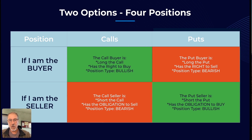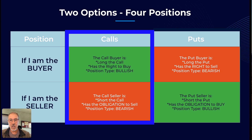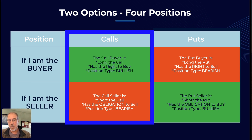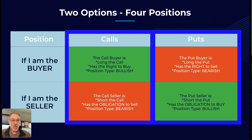There are really only two options: puts and calls. But these two options can create four different positions depending on whether you're the buyer or the seller. The call buyer is said to be long the call — they have the right to buy at a predetermined price, and this is considered a bullish position. The call seller is short the call and has the obligation to sell at that strike price, which is considered a bearish position. The put buyer is long the put — they have the right to sell at a certain price, and it's considered a bearish position. The put seller is short the put, has an obligation to buy at the strike price, and it's considered a bullish position.